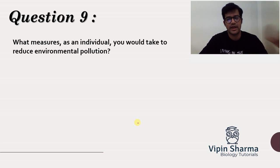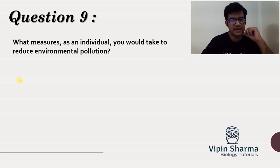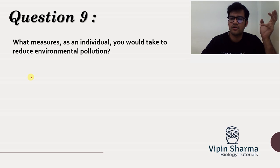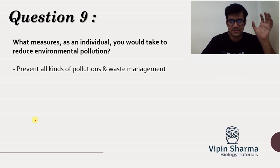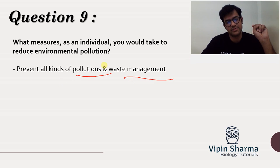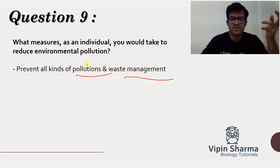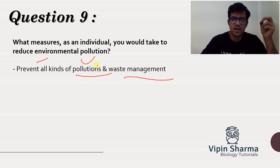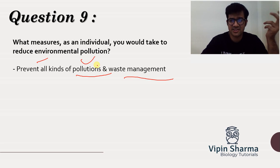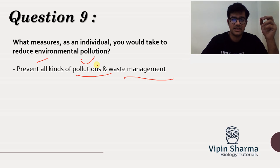Question number nine is a pretty open-ended question where you can write a lot. I have broken it down into one simple line: prevent all kinds of pollution and manage waste. The question asks at what level you can conserve biodiversity. If you are preventing any kind of pollution — ranging from air, water, and soil — for air pollution you can say reduction in use of fossil fuels, use of CNG, not open burning household waste.